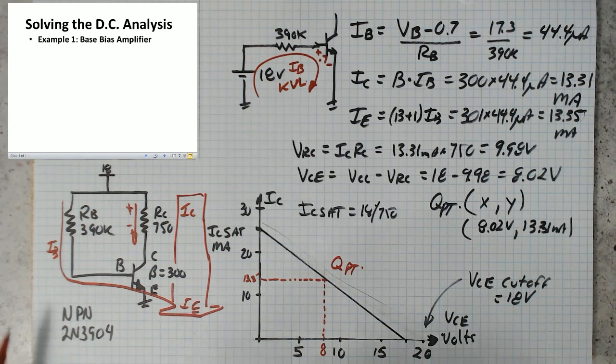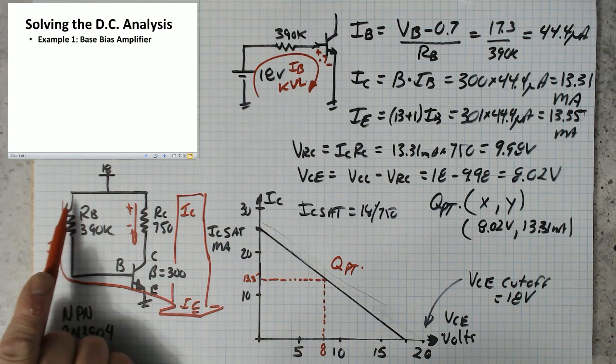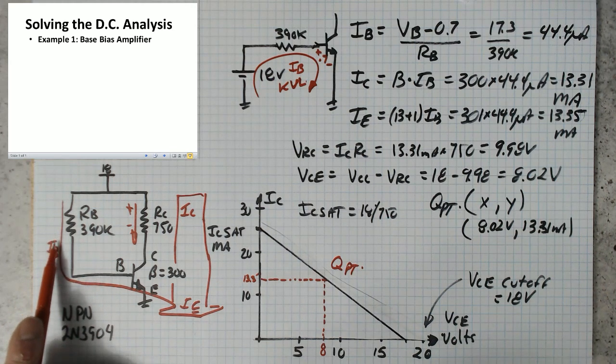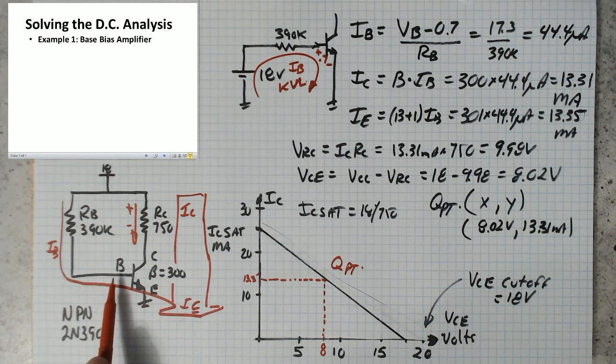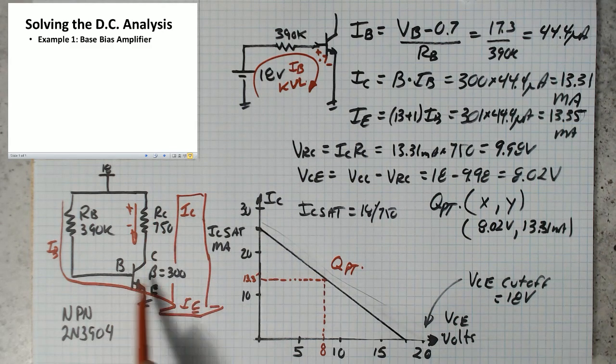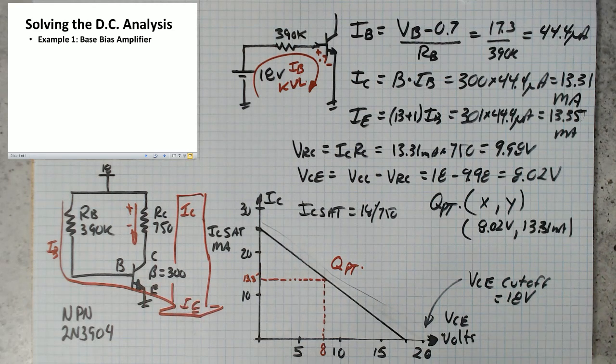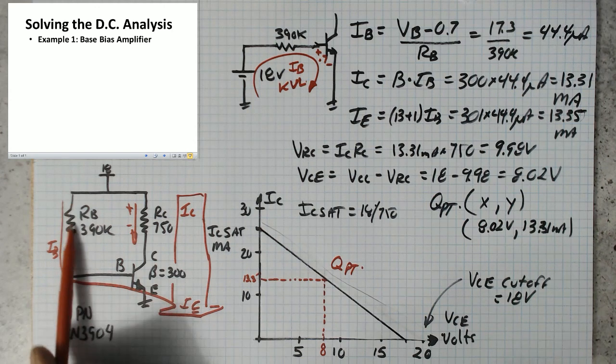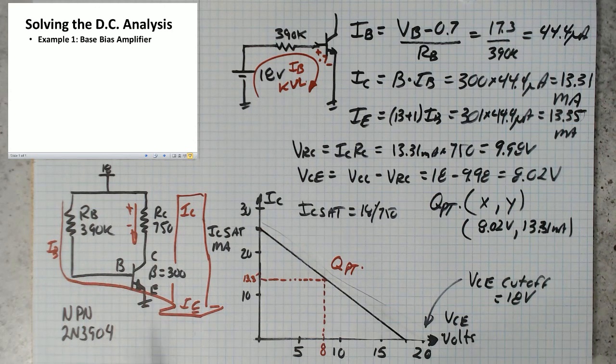So a base bias amplifier has a single base resistor. Current flows down here and goes into the base, flows from base to emitter, and that causes a larger current to flow from collector to emitter. How much larger? About 300 times larger. And again, in the base bias circuit, there's a single base resistor and the emitter is grounded.